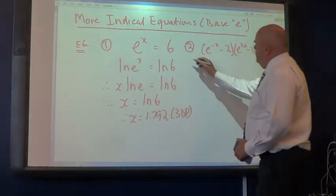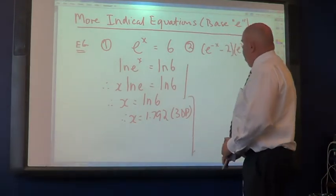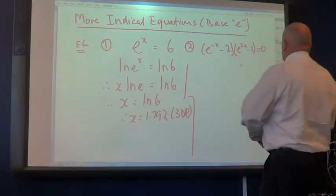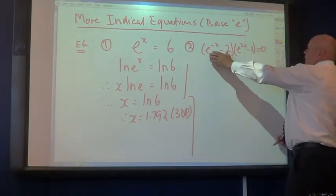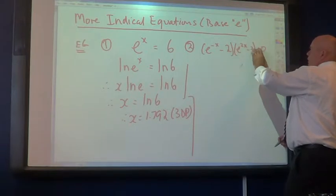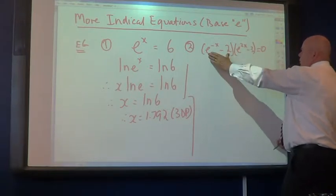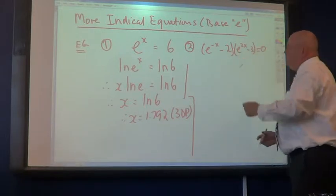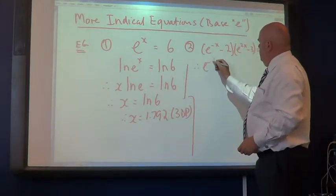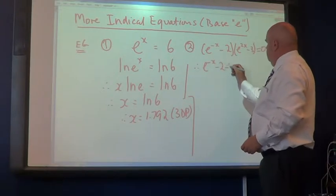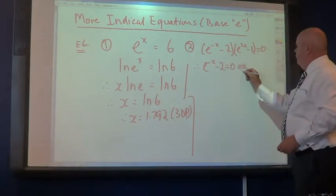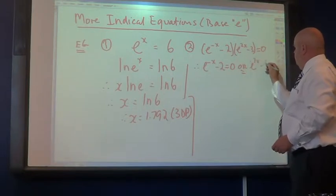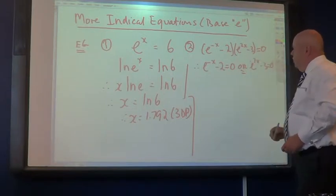Okay, what about this one? Well, here, once again, our friend the null factor theorem comes into play, doesn't it? It's a binomial product, really. So, that times that equals 0. That means either that's equal to 0, or that's equal to 0. And so our first line, we just write that down. Therefore, e to the negative x minus 2 equals 0, or e to the 2x minus 3 equals 0, and we solve for x.